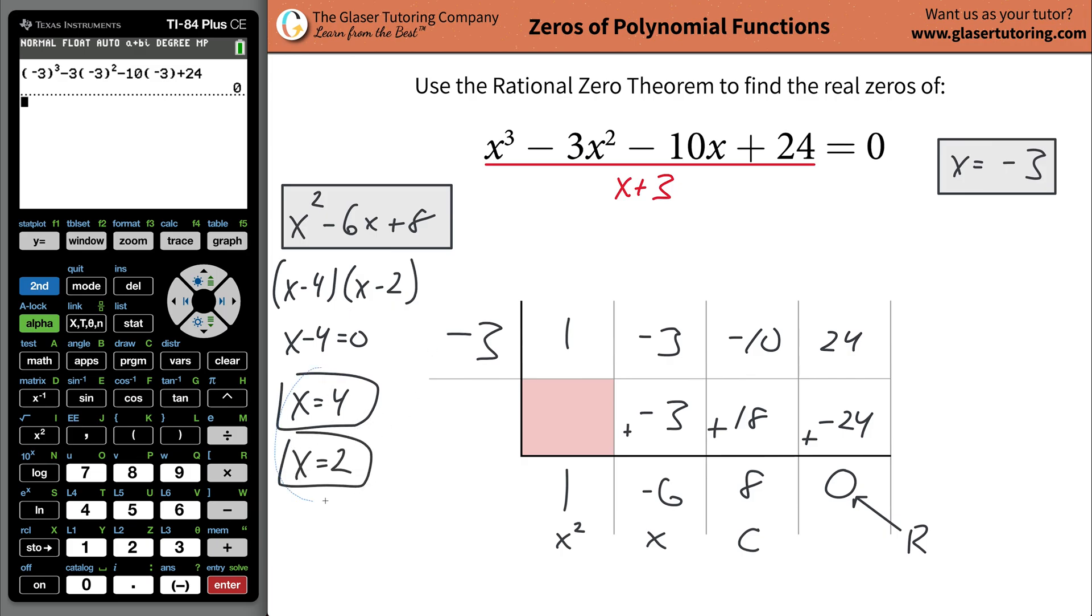So what you have now found is you found the three zeros. What you now have found is all of the possible zeros. And we would anticipate that there could be a maximum of three zeros, real zeros, because the power tells us the maximum number, the leading power.